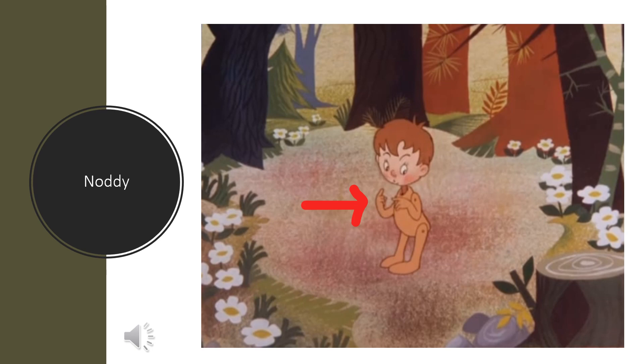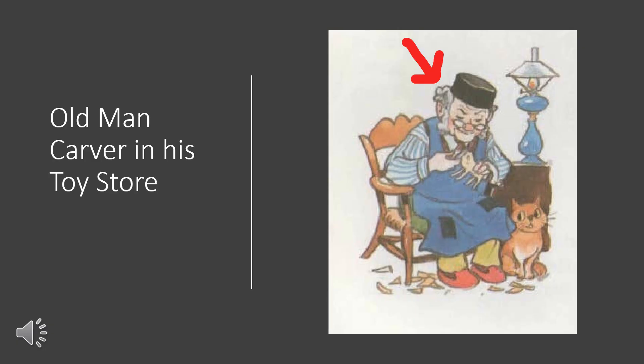Noddy is a little wooden boy with a nodding head. Noddy ek khilone ke dhukaan mein, ek lakdi ke nakashi dhwara banaya gaya tha.